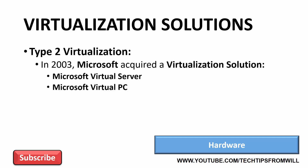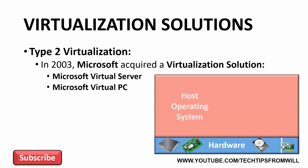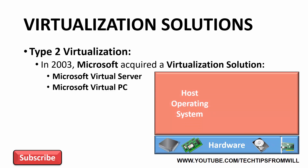First of all, you would deploy a physical server. From an architecture standpoint, this physical server is known as the hardware layer. The hardware layer is where your processor, RAM, disk, and networking resources reside. After deploying your hardware layer, you would then install a Microsoft operating system onto the physical server. From a virtualization standpoint, this operating system is known as the host operating system.